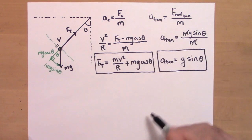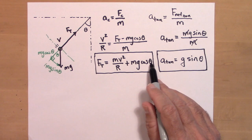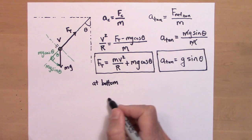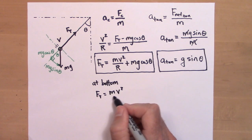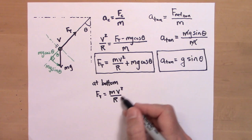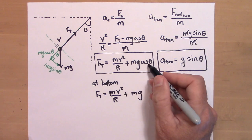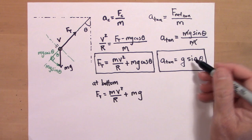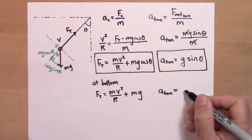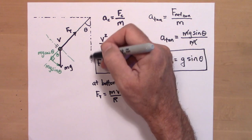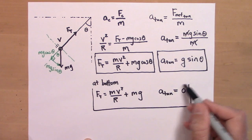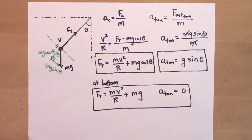When she comes through the vertical — the bottom of the swing — theta equals zero degrees. Cosine of zero is one, so the tension is MV squared over R plus Mg, and she's moving fastest here so this is the maximum tension. The sine of zero degrees is zero, so her tangential acceleration is zero at the bottom — she's not speeding up or slowing down right at that instant. That's all for today, thanks for visiting.